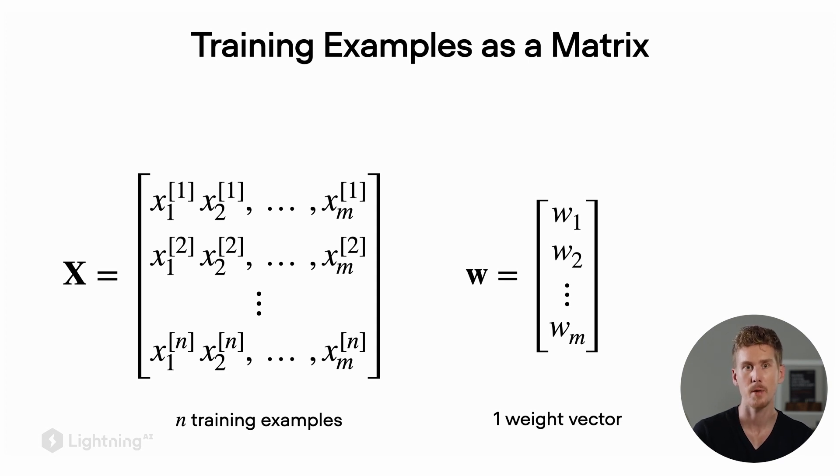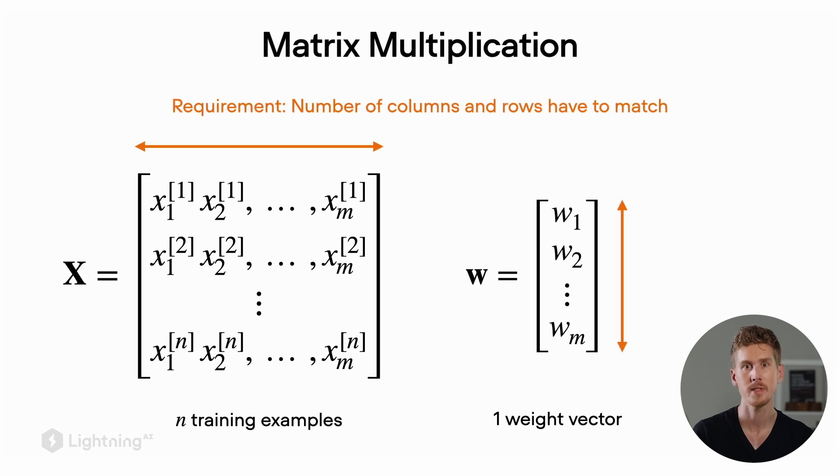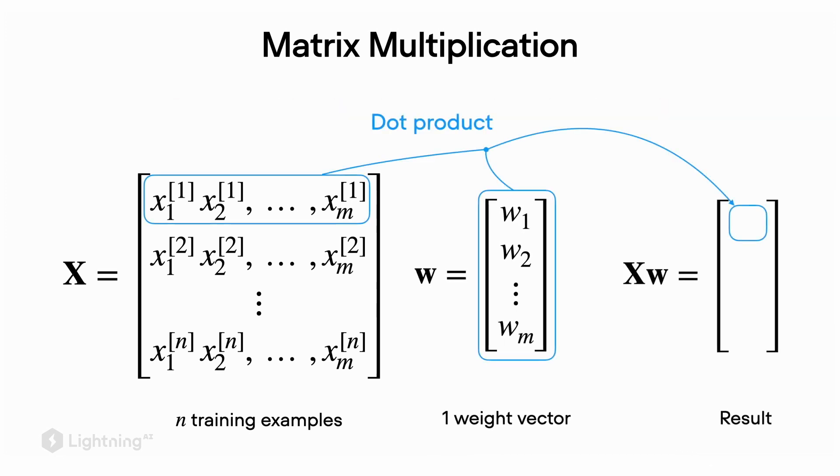If we ensure that the weight matrix X has the same number of columns as the weight vector has rows, we can then actually compute the matrix multiplication via dot products. For example, to get the first value in the output vector, we perform a dot product between the first row of the matrix and the weight vector. Then we repeat this for the second row of the weight matrix and the weight vector to obtain the second output value. And we continue until we multiplied each row in the matrix X with the weight vector to obtain all the outputs in the output vector.